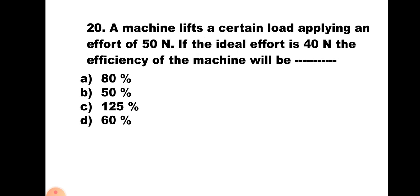Question number 20: A machine lifts a certain load applying an effort of 50 Newton. If the ideal effort is 40 Newton, the efficiency will be — A) 80%, B) 50%, C) 125%, D) 60%. Using efficiency = W × 100 / (P × VR), and W/VR = ideal effort P_I, efficiency = P_I / P × 100 = 40/50 × 100 = 80%. Hence the correct answer is A) 80%.